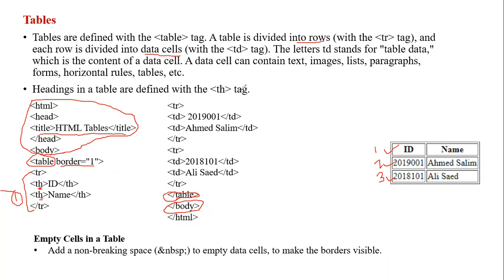The first row has ID and Name using TH. For the second row, you open TR and close TR. In the second row you have a student ID like 2019001 and a name like Ahmad Salem - you put this data using TD. After the heading row you change to TD - TD open, TD close, TD open, TD close. The third row is similar with TR open and TR close.